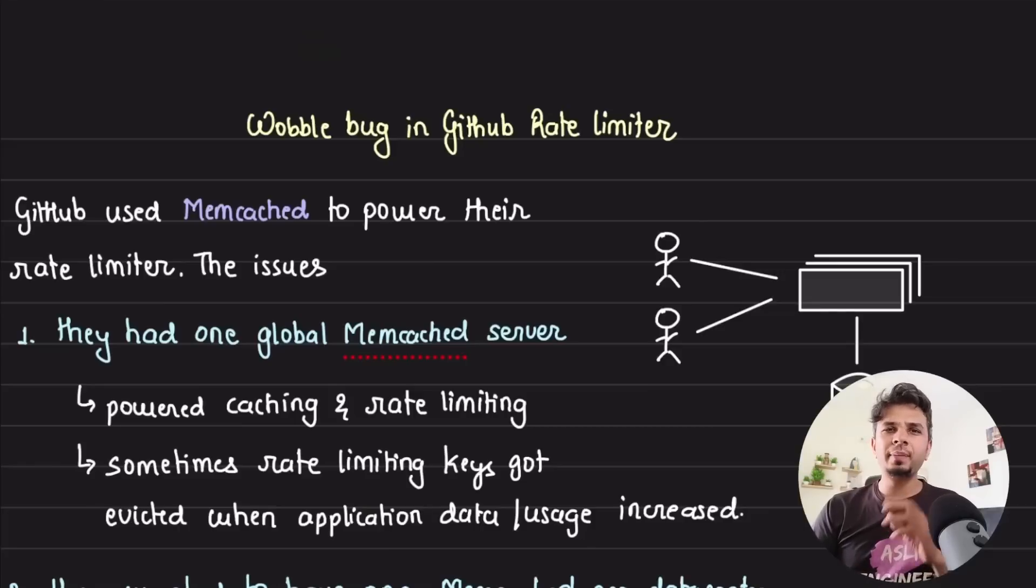Rate limiters are essential to keep any product stable and away from abuse, and GitHub, like any other company, did the same. But when they implemented their rate limiter using Redis, they saw pretty weird but interesting behavior. In this video, we understand how they implemented the rate limiter and go in depth about what happened, why it happened, and how they fixed it.